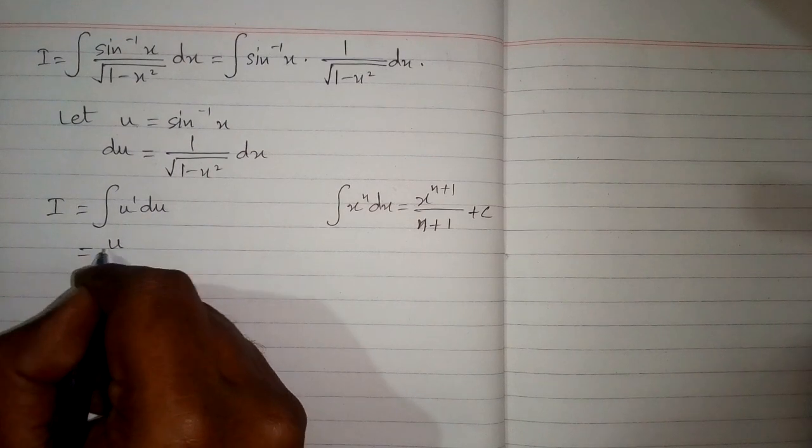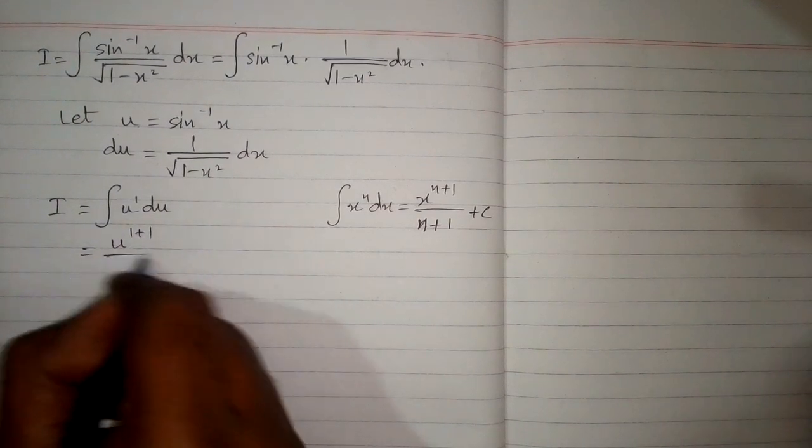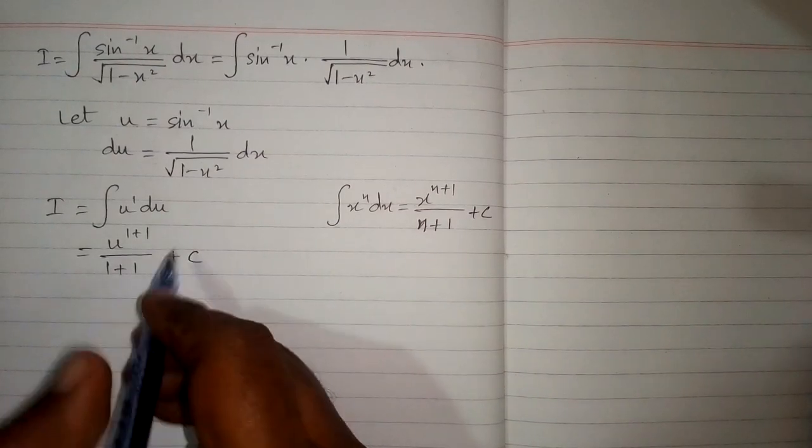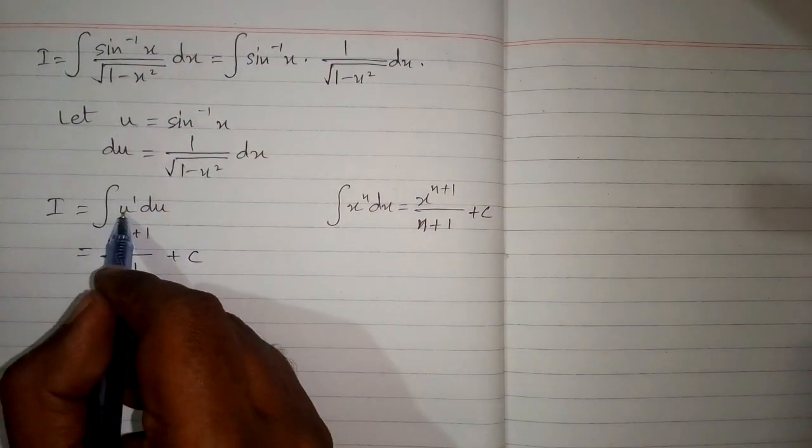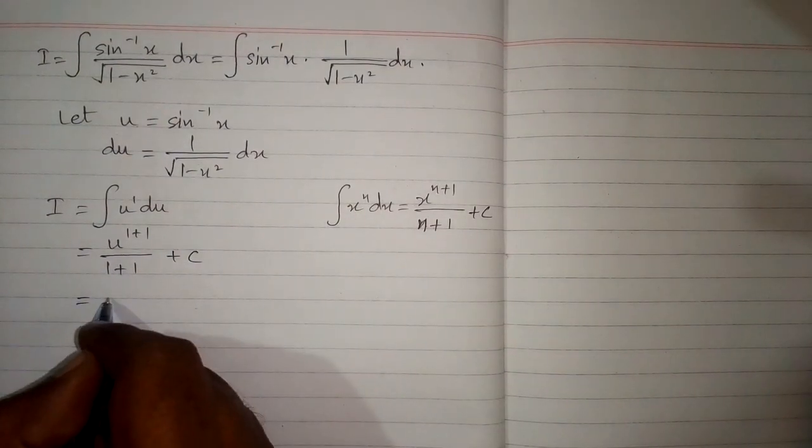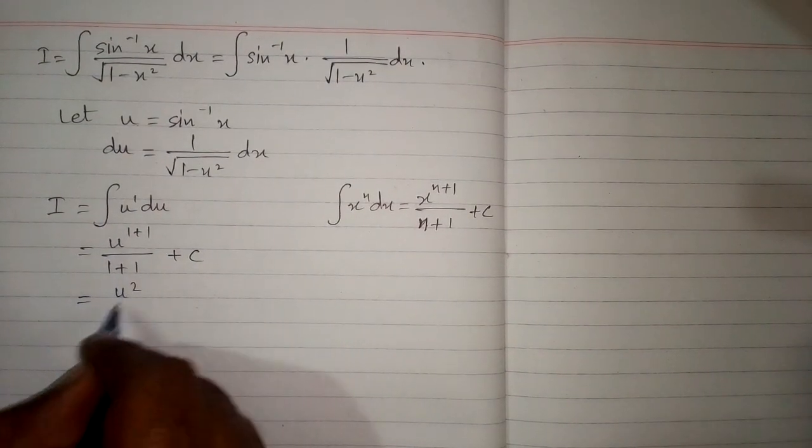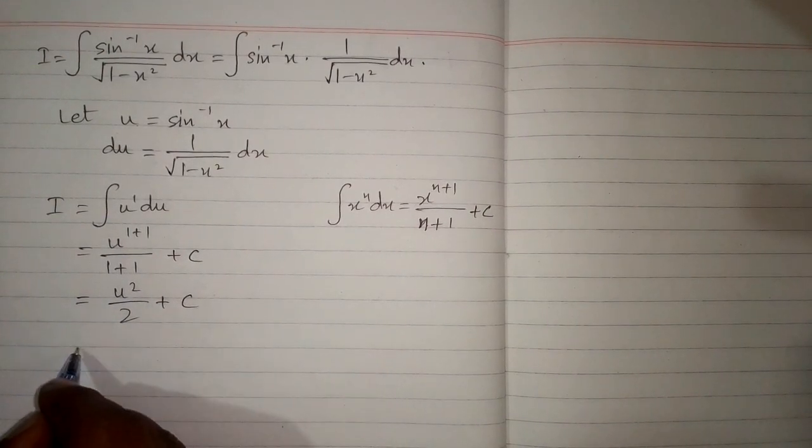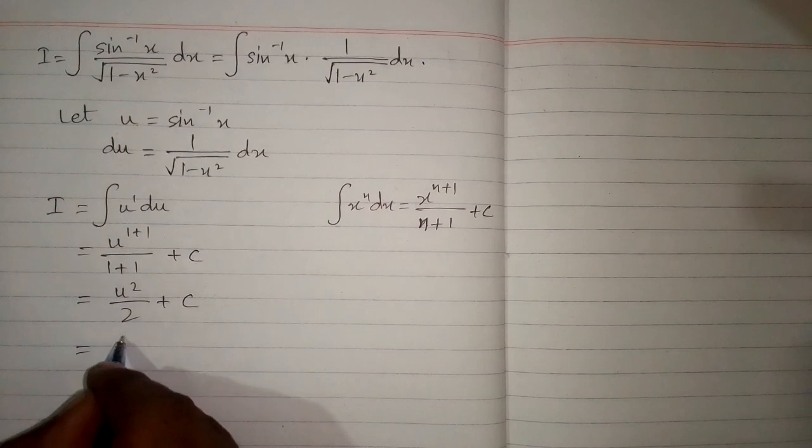So we have u raised to the power 1 plus 1 upon 1 plus 1 plus c by this formula, because we have 1 in place of this n and u in place of this x. So we have u square upon 2 plus c, and then we put the value of u over here.